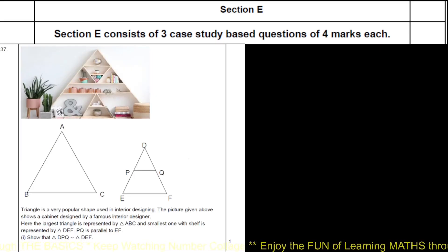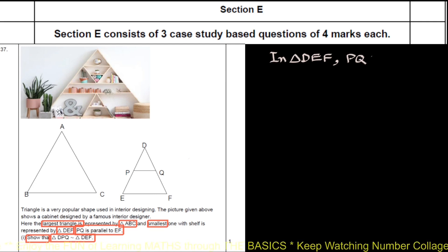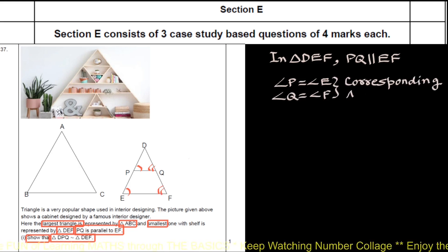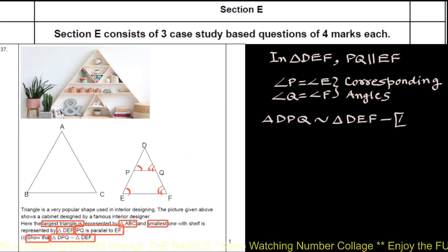Largest triangle is triangle ABC and smallest triangle DEF. PQ is parallel to EF and we have to show that triangle DPQ is similar to triangle DEF. In triangle DEF, PQ is parallel to EF, which shows that angle P is equal to angle E and angle Q is equal to angle F, and this is by corresponding angles. Therefore, triangle DPQ is similar to triangle DEF by AA criteria or AA test of similarity.